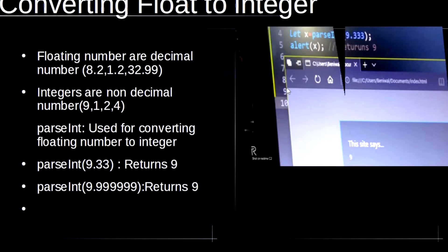Another example: let x = parseInt(9.33). When we run our alert statement it returns 9, and as you can see the output shows 9.